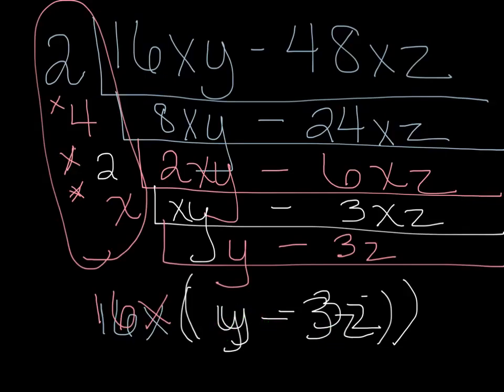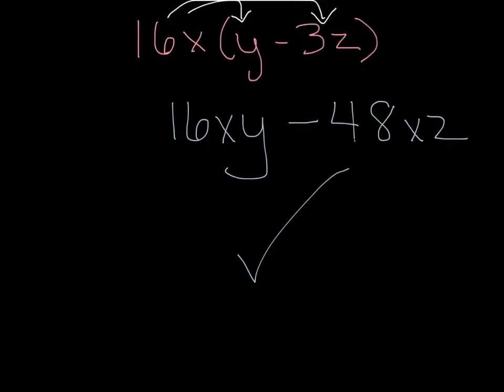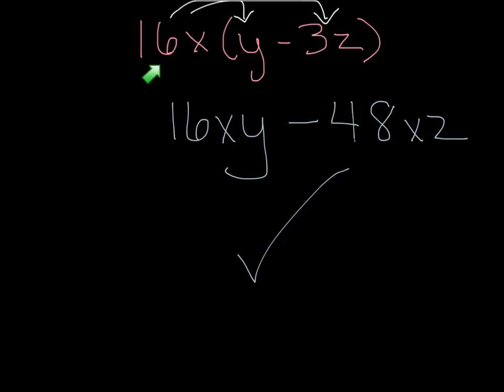Now, there is a way to check this using the distributive property. To use the distributive property to check your expression to see if it is factored correctly, you should take the factored version, which is 16x times the quantity y minus 3z, and use the distributive property to multiply. 16x times y is 16xy minus, it stays the same because a positive 16x times a negative 3z gives us a negative 48xz, which was our original expression. So that means we did it correctly.